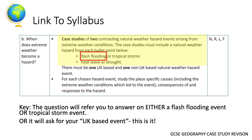So how does it link to the syllabus? The Boscastle Flood is your example of a flash flooding natural weather hazard. It is your example of a UK based weather hazard event. The question in the exam will either ask you for a flash flooding event or a UK based natural weather hazard event, and you will use Boscastle as your answer for both.